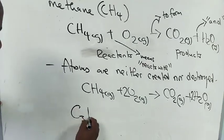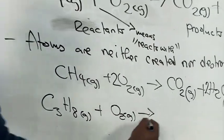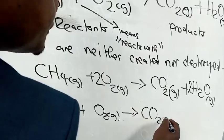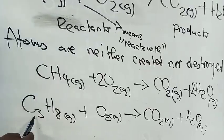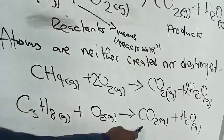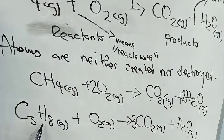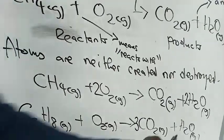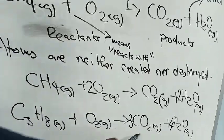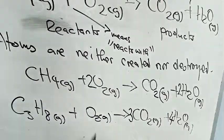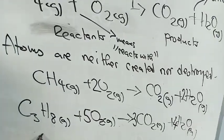Another example: we have C3H8, that is propane, plus oxygen, giving us CO2 plus water. We have three carbons here and one carbon on the product side, so we introduce a three in front of CO2. Then we have eight hydrogens here and two in H2O, so we place a four in front of H2O. Now let's check oxygen: we have six oxygens from 3CO2 plus four from 4H2O giving ten, so to balance it we simply need a five in front of O2.